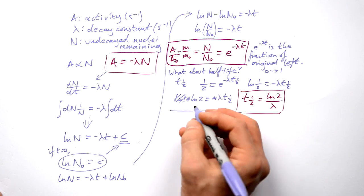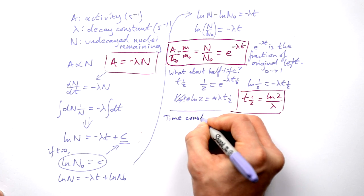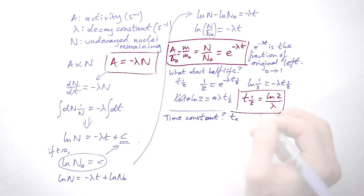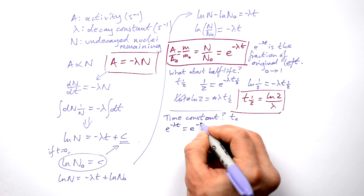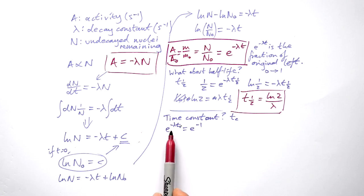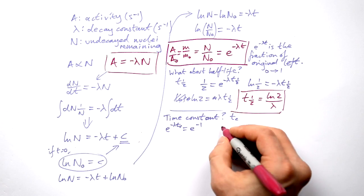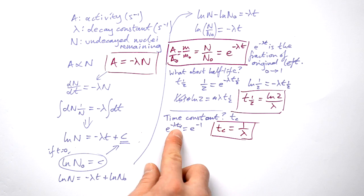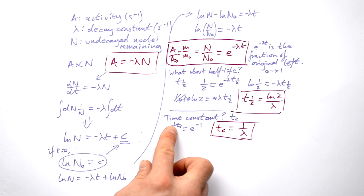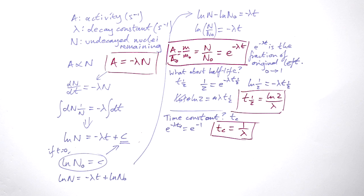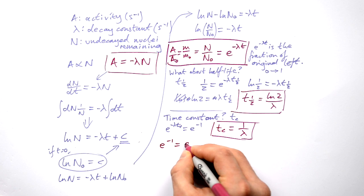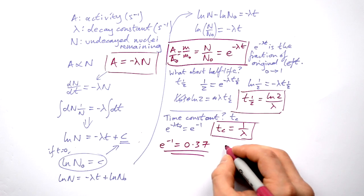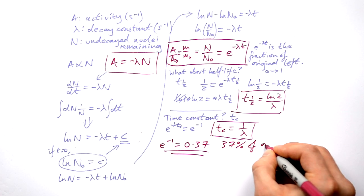Then we come across another concept — instead of half-life, we're talking about a time constant, which you come across in radioactivity and also capacitors. We give it the symbol Tc. This is a time such that e to the minus lambda Tc equals e to the minus 1. For that to be true, lambda times Tc must equal 1, so Tc equals 1 over lambda. If you put e to the minus 1 into your calculator, you get approximately 0.37, so the time constant always gives you 37% of the original value.